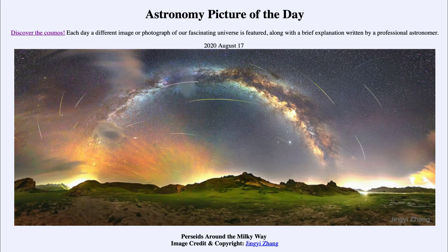One thing different about this image is that the meteor trails appear curved. In reality they are not — meteor trails are nice and straight as they come through the Earth's atmosphere. However, the projection used to put almost the entire sky into one rectangular image does cause distortions, so things like the Milky Way and the meteor trails are distorted and curved by the image.